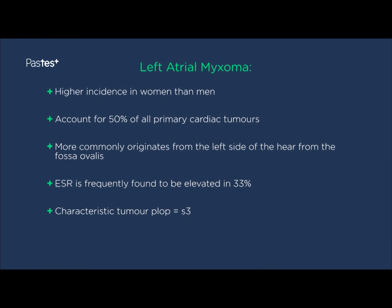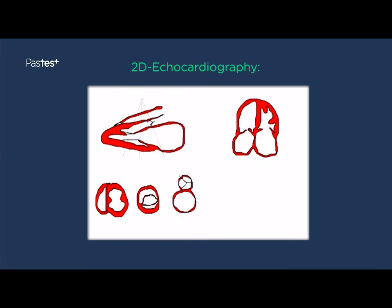Atrial myxoma accounts for about 50% of all primary cardiac tumours and has a higher incidence in women than men. More frequently it originates from the left side of the heart than the right, and frequently from the fossa ovalis. When found, it is frequently associated with an elevated ESR. Characteristically, a tumour plop or an S3 is frequently described. Patients frequently present with symptoms of presyncope, syncope, signs of left and right heart failure, and sometimes sudden death in about 15% of cases. Echocardiography is by far the best way of diagnosing a left atrial myxoma.